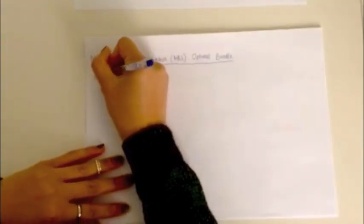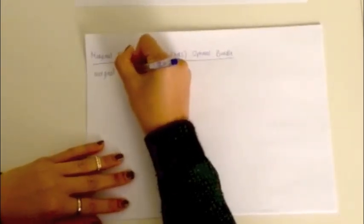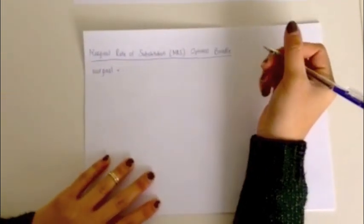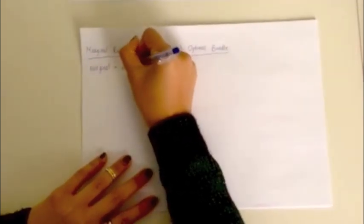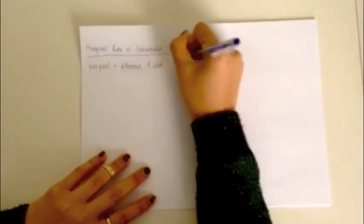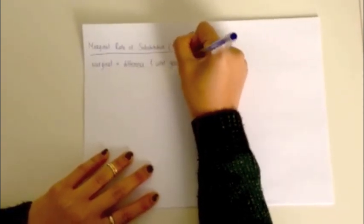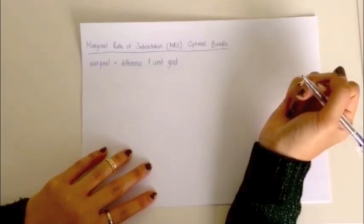So firstly, I'm going to define marginal. Marginal, in any sense, in the sense of production, cost, or utility, refers to the difference for one unit of goods. So in this case, we're going to be talking about utility. So the marginal utility of a good will be the amount of utility that you will gain with one extra unit of that good.